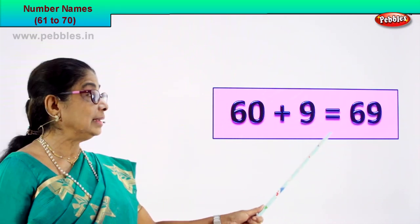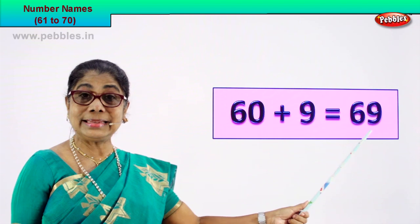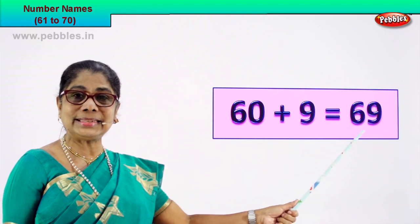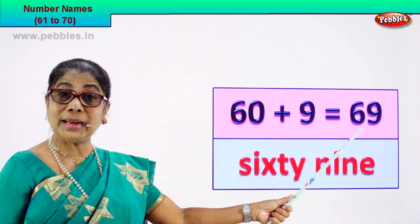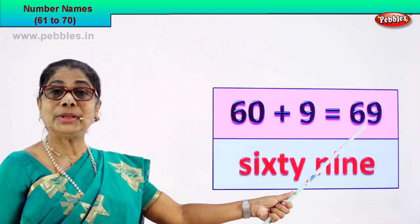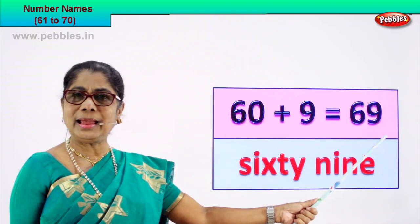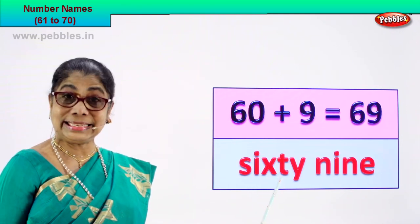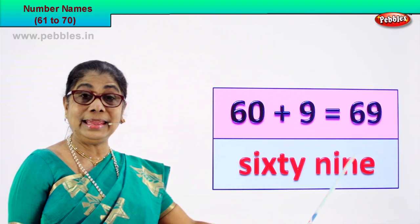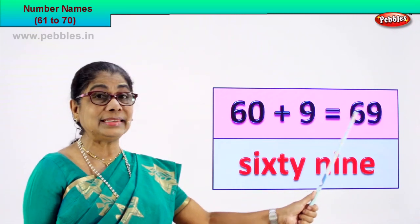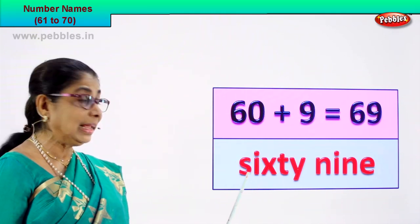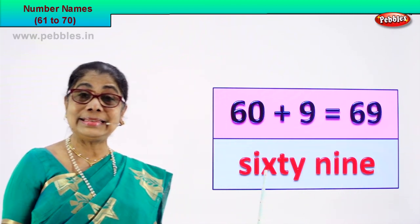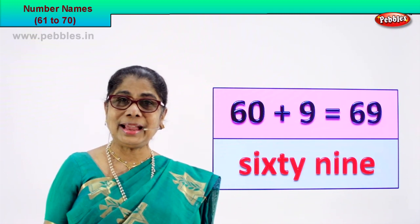60 plus 9 is equal to 69. 6 and 9, 69. That's the numeral. How do we spell and write its name? You can spell 60, you can spell 9 — that's it! S-I-X-T-Y, 60. N-I-N-E, 9. Numeral 6 and 9, 69. And its name: S-I-X-T-Y N-I-N-E, 69. Good!